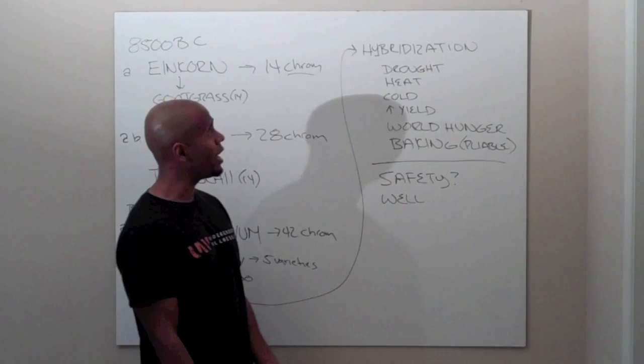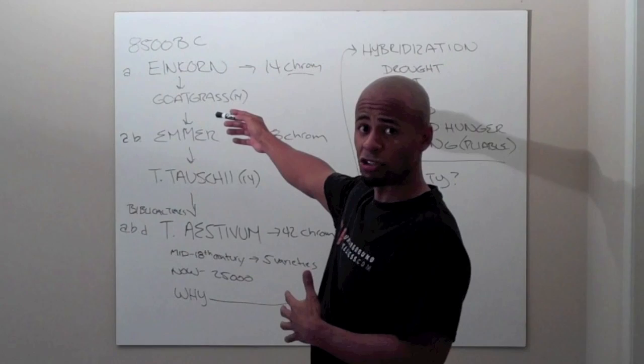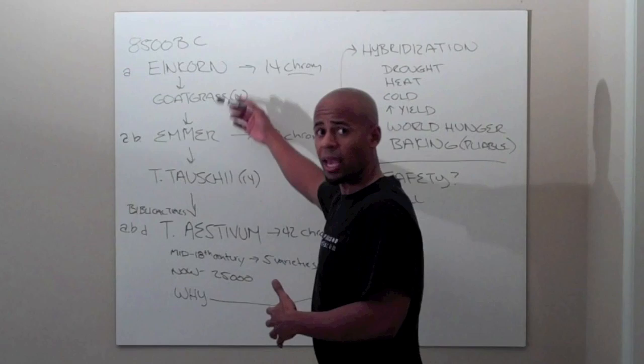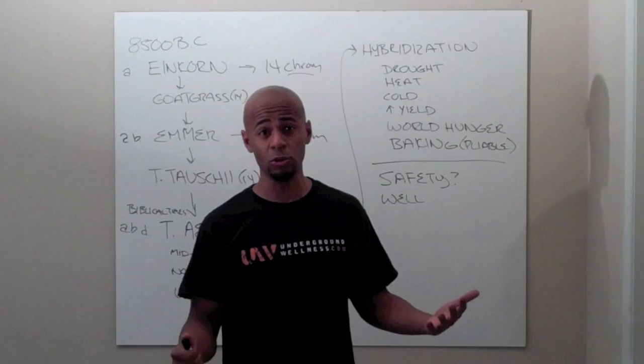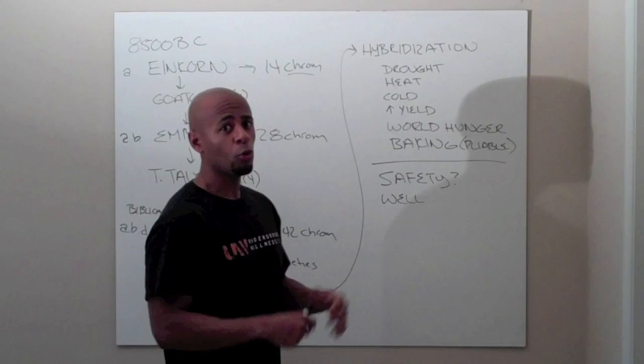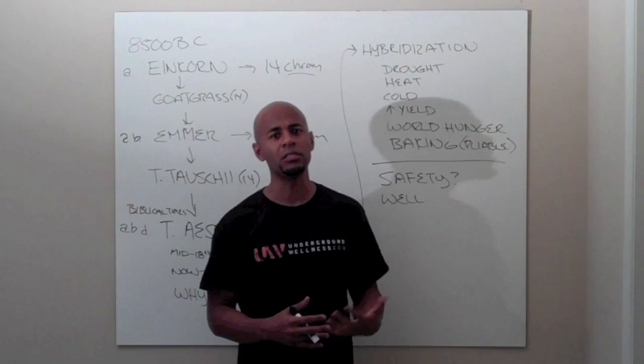This all happened by way of hybridization. We have to understand here, we went back to 8500 BC and went all the way up to the mid-18th century with very little change in the wheat. Now, in the last 50 years, wheat has changed considerably. The wheat that we consume now is probably not the same wheat that your grandma consumed when she was a little girl. Completely different. Again, through hybridization.